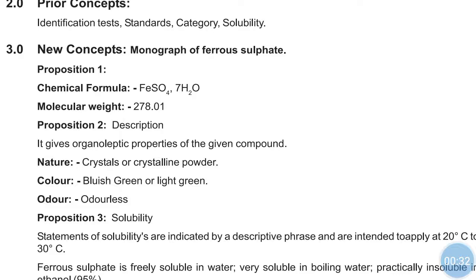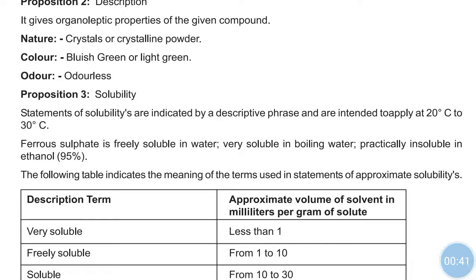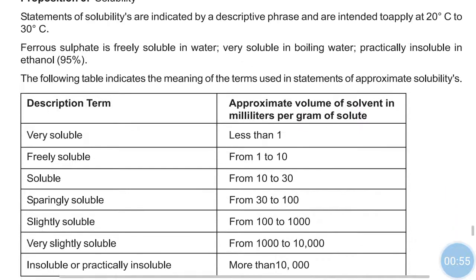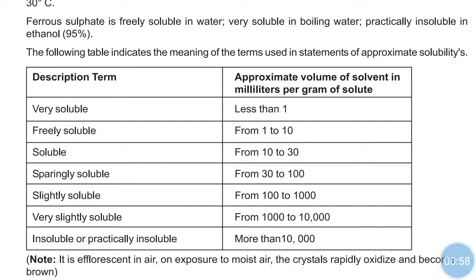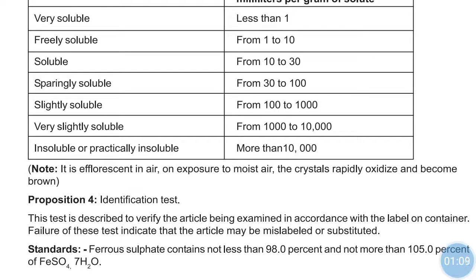The chemical formula of ferrous sulfate is FeSO4·7H2O. Its color is bluish green or light green, and its nature is crystalline powder — these are the organoleptic properties. Regarding solubility, it is freely soluble in water, very soluble in boiling water, and insoluble in ethanol. The descriptive terms for solubility parameters are very important — 'very soluble' means less than 1 part.